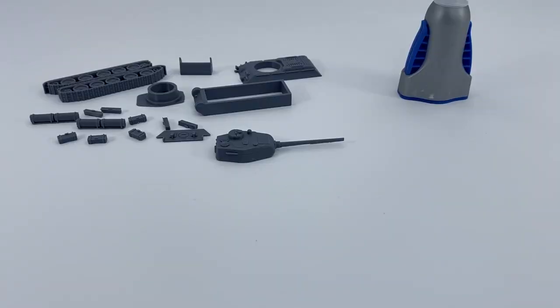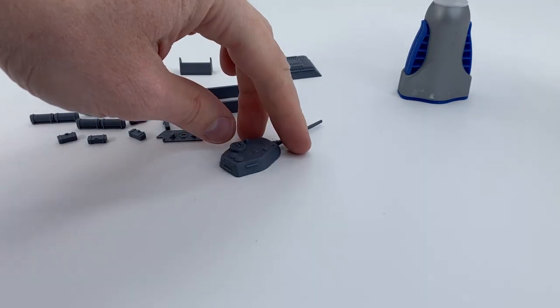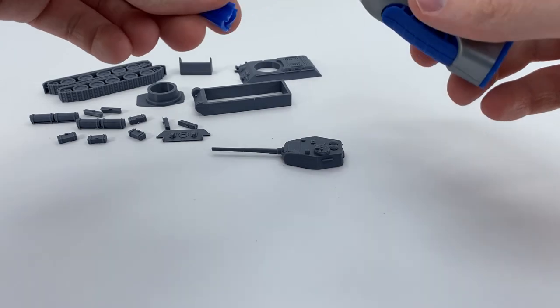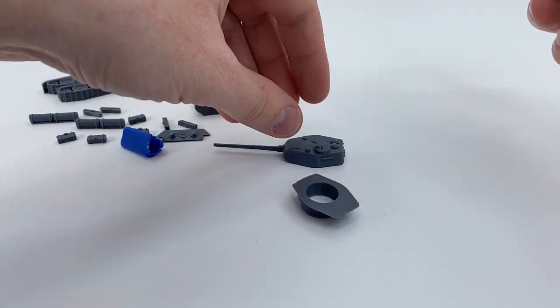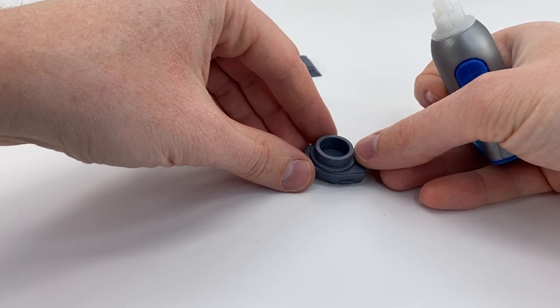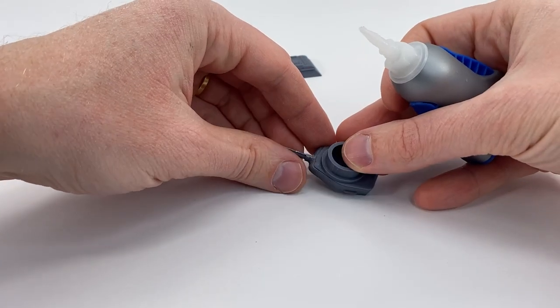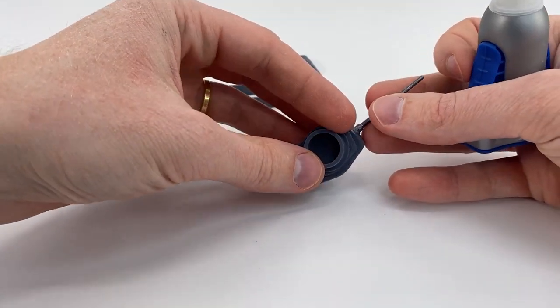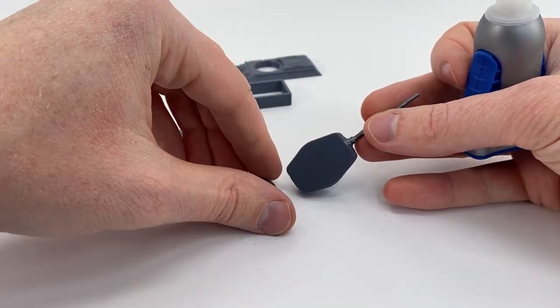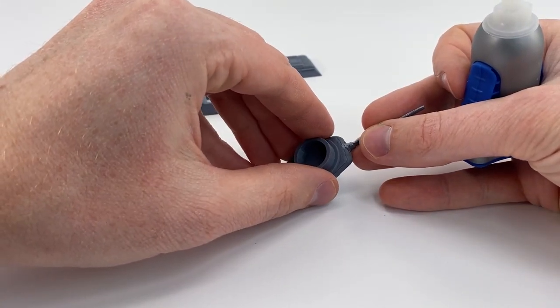All right so that completes that part of the assembly. Now let's start putting this together. The most obvious and easy step is we're going to glue this part together. And it's going to go like this. And you can see that because of how the features match up well in the front.